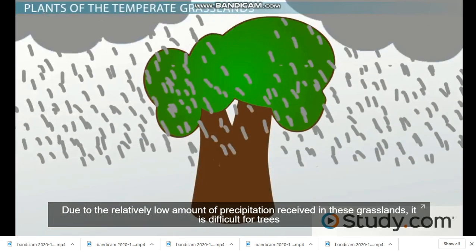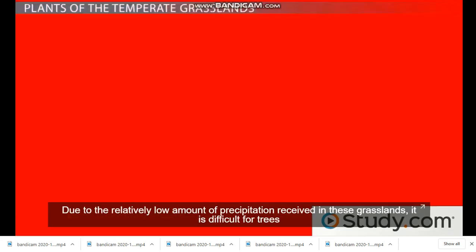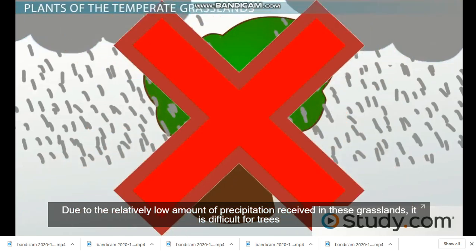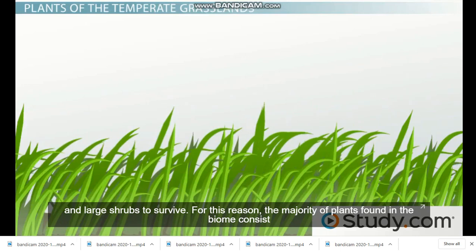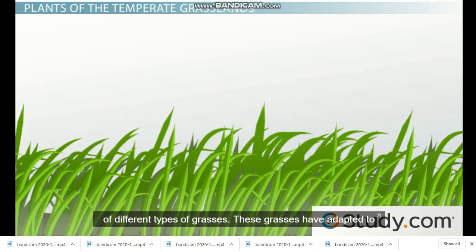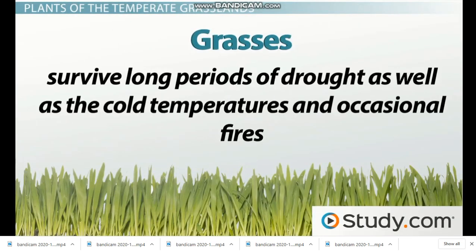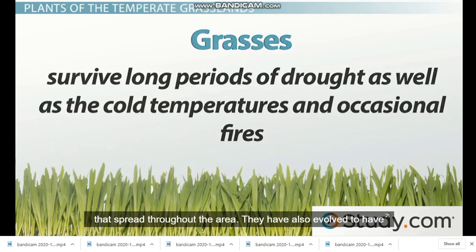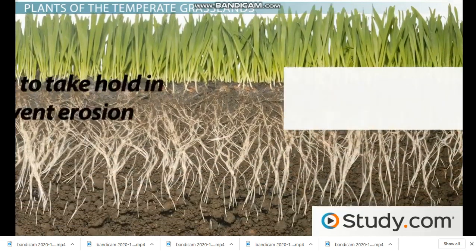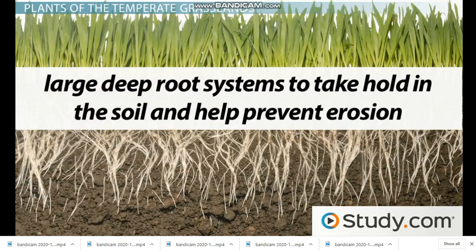Due to the relatively low amount of precipitation received in these grasslands, it is difficult for trees and large shrubs to survive. For this reason, the majority of plants found in the biome consist of different types of grasses. These grasses have adapted to survive long periods of drought, as well as the cold temperatures and occasional fires that spread throughout the area. They have also evolved to have large, deep root systems to take hold in the soil and help prevent erosion.